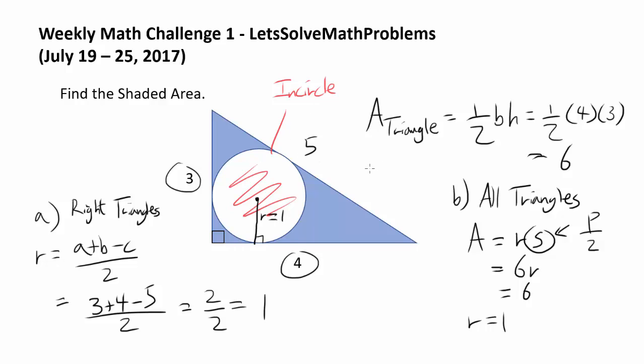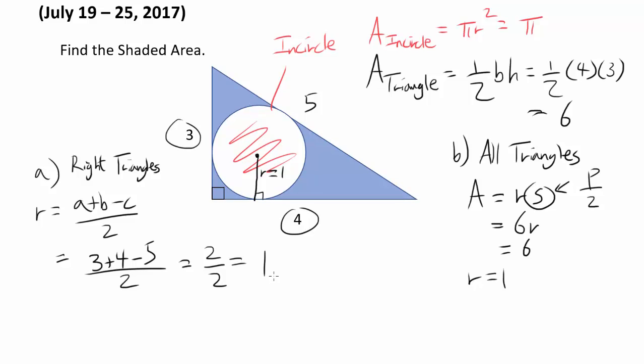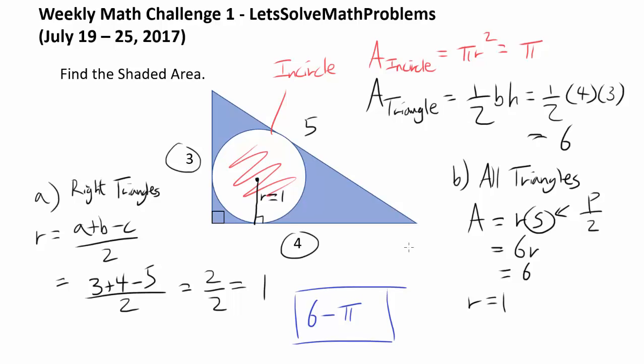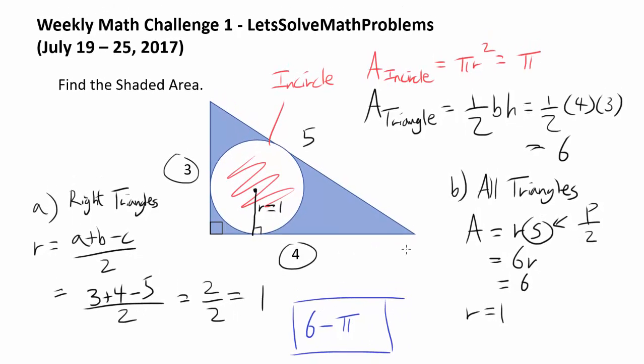So what is the area of the incircle? That's going to be pi r squared. And since r is 1, it's going to be pi. So to find the shaded area, we are very close to being done. All we have to do is subtract the area of the incircle from the area of the triangle. So the answer is 6 minus pi. That's the answer to the first weekly math challenge question.